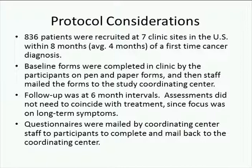We recruited 836 patients at seven clinical sites across the U.S. within eight months of their diagnosis. We didn't get them prior to treatment — we wanted to see how they were faring if they were in the midst of chemotherapy and other types of treatment moving forward. All of the baseline forms were completed in the clinic on pen and paper, and then the staff mailed the forms to the centralized coordinating center. All patients were followed up by mail at six-month intervals, so they did not come back to the clinic for any of these follow-up assessments, which freed us from worrying about coinciding with particular treatments or side effects — we wanted to look at their long-term symptoms and quality of life.